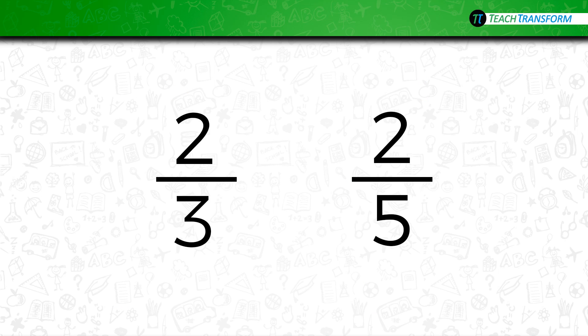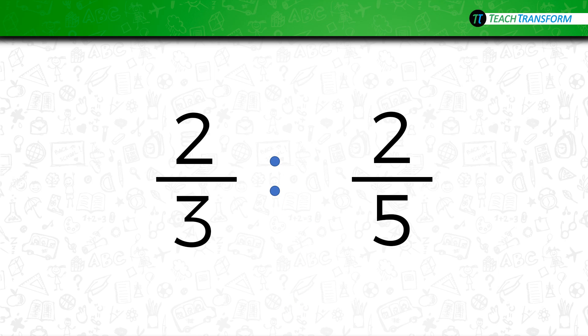So how do you know when a fraction is greater or less than another one? Do you sometimes have trouble remembering which symbol to write? Here is a way to help you remember: put two dots by the largest fraction and one dot by the smallest fraction, and then connect the dots to make an inequality symbol. That'll help you remember how to write the symbol if you already know which fraction is larger.